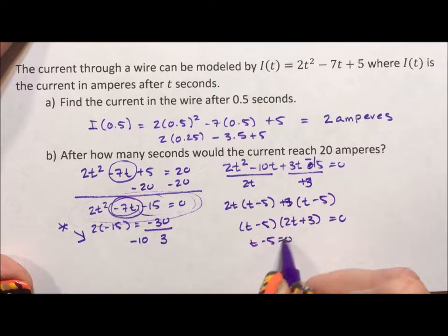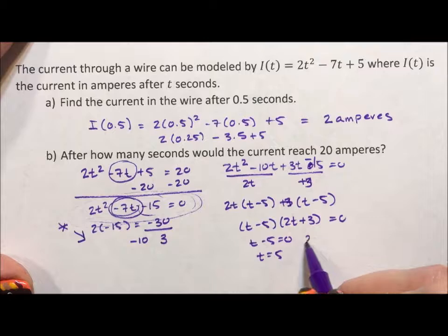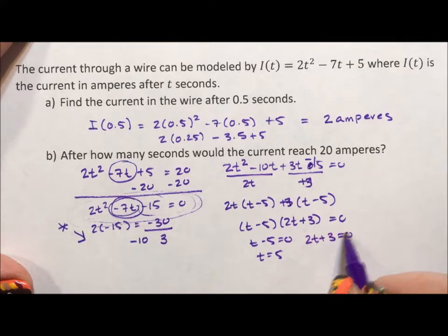So t minus 5 equals 0 when t is equal to 5. And 2t plus 3 equals 0 when 2t equals negative 3 or t equals negative 3 halves.